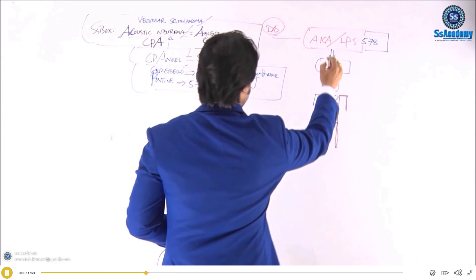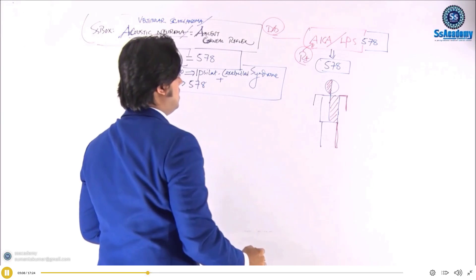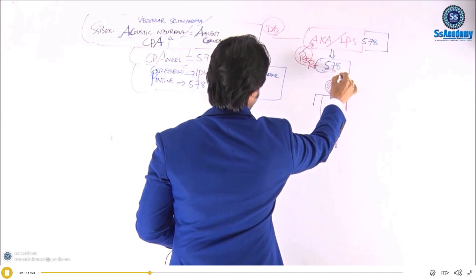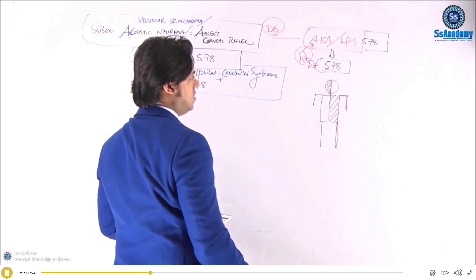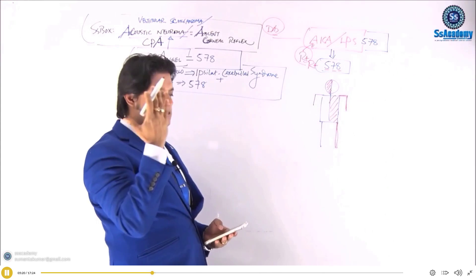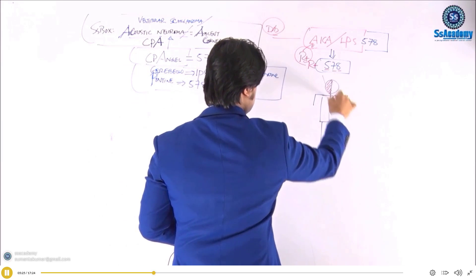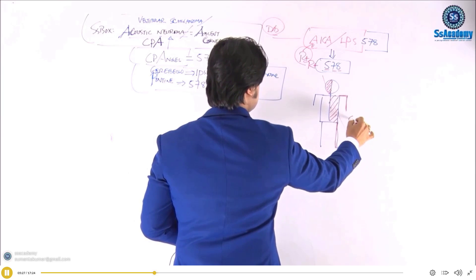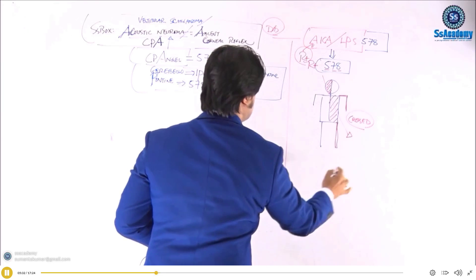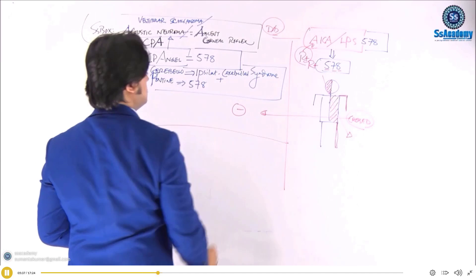If the right-sided anterior inferior cerebellar artery is affected, all the right-sided 5-7-8 features will be lost. Right CN5 covers the right half of the face and the opposite half of the body — the crossed features. The crossed features will be present in AICA syndrome. In contrast, in the CP angle tumor, the crossed features will be absent.